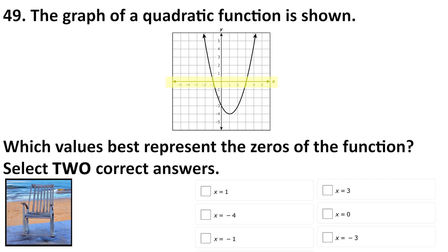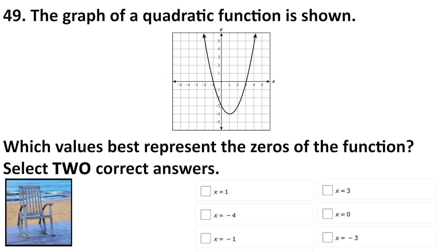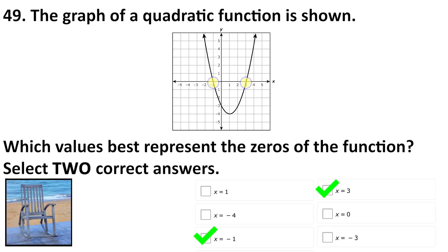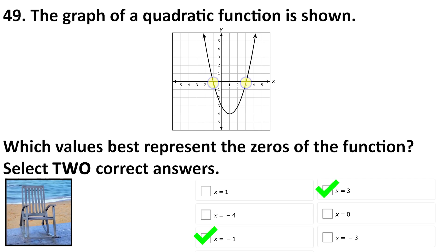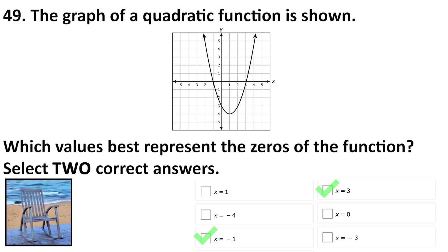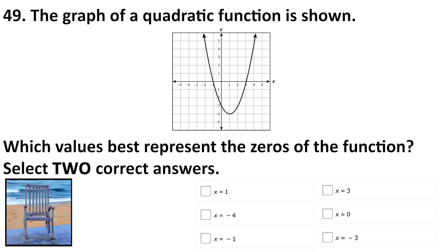Since the graph crosses at both negative one and three, those are the two zeros. Thanks for watching, have a great day, and remember that even if you can't see me — never give up.